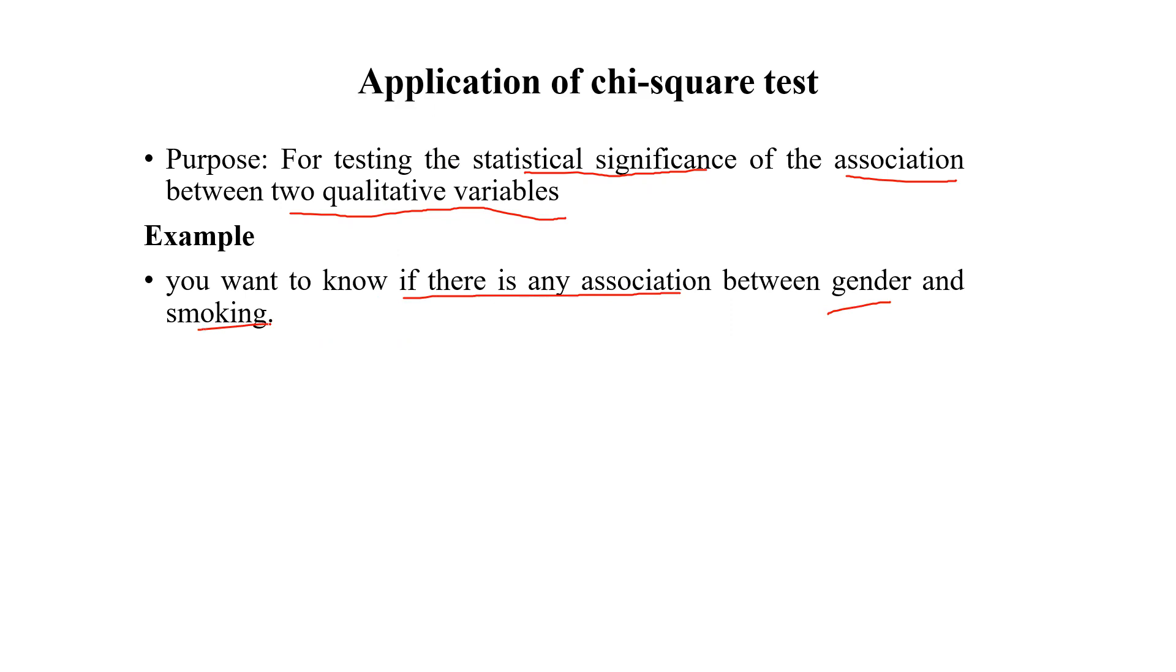If such kind of data, we can apply chi-squared test. Another example, is there any association between taking aspirin and risk of heart attack in the population? If such kind of objective, and we are going to analyze the data, we can apply the chi-squared test.